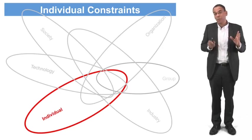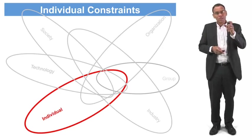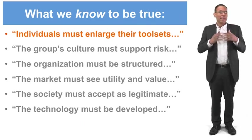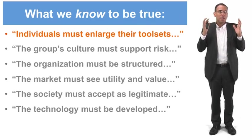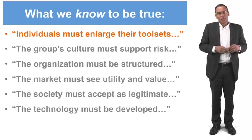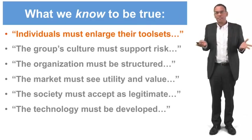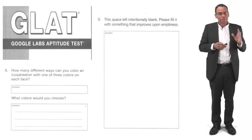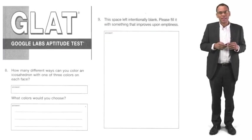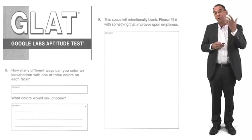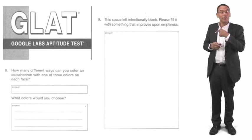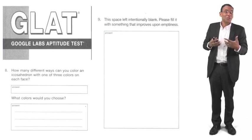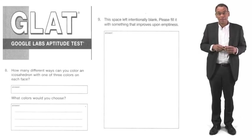Week one we're going to start with individual constraints. Individual constraints are really about individuals enlarging their tool set — how do we actually get to know more different kinds of ideas, more different ways of thinking? I'll share this with you later. This is a Google Labs aptitude test. Google wants creative people, and at one point they were using this as a job application screening device to find out who those creative people are.